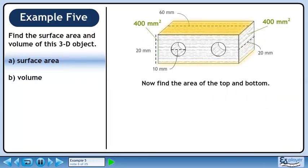Now find the area of the top and bottom. The area of a rectangle is length times width. The dimensions are 60 mm by 20 mm. The surface area is 200 mm².